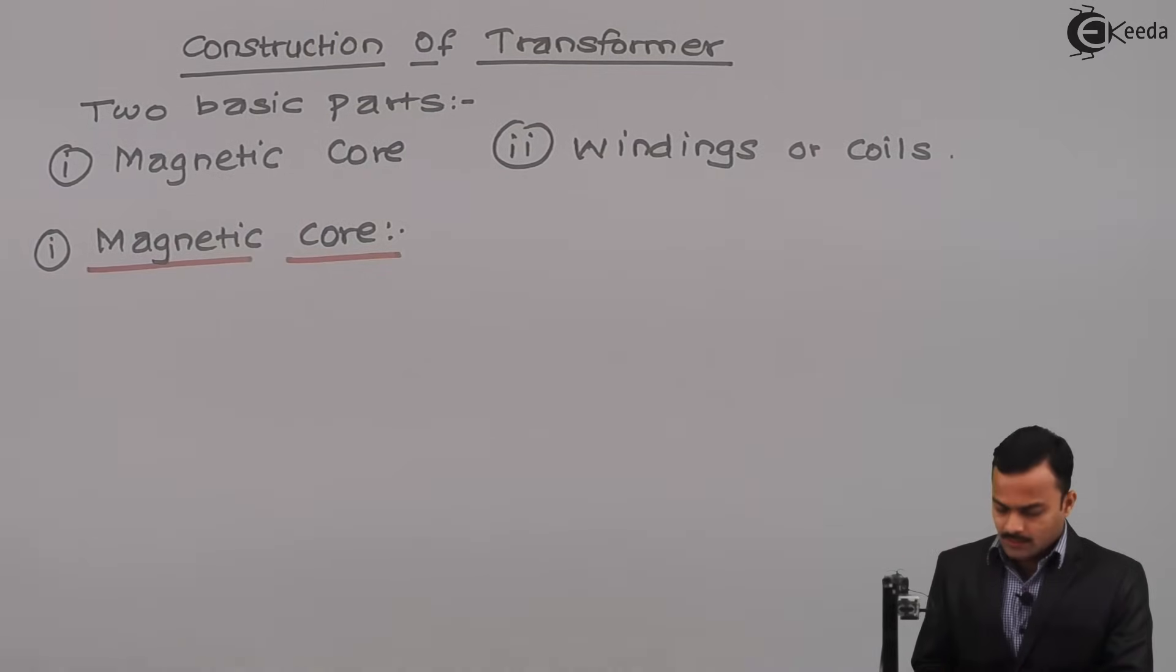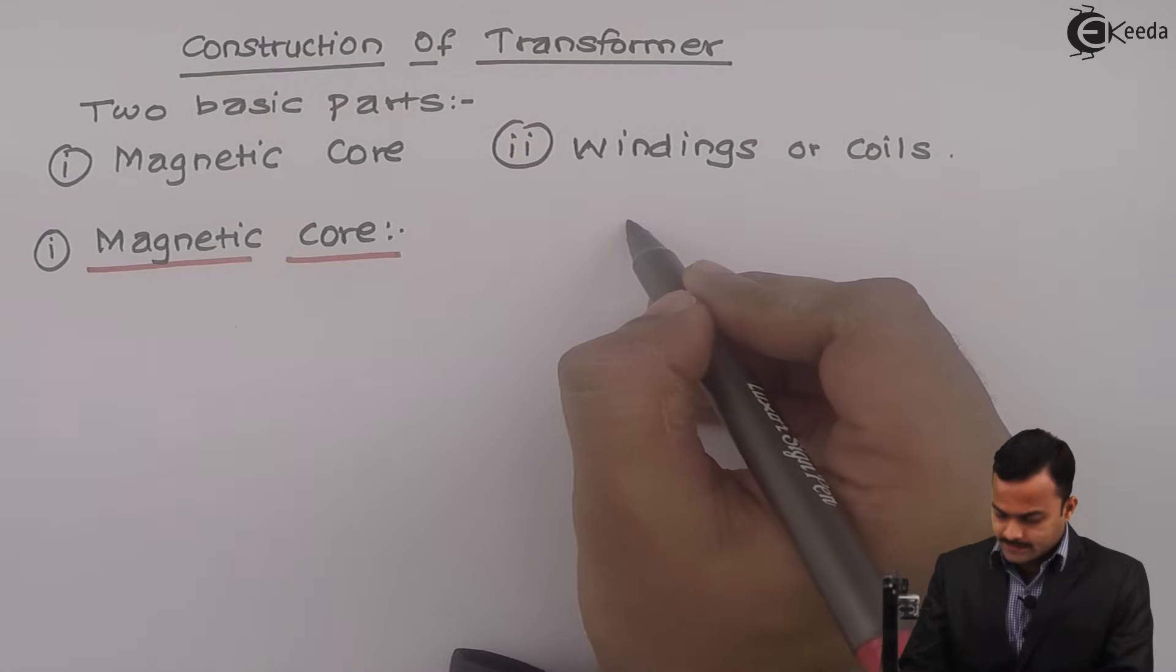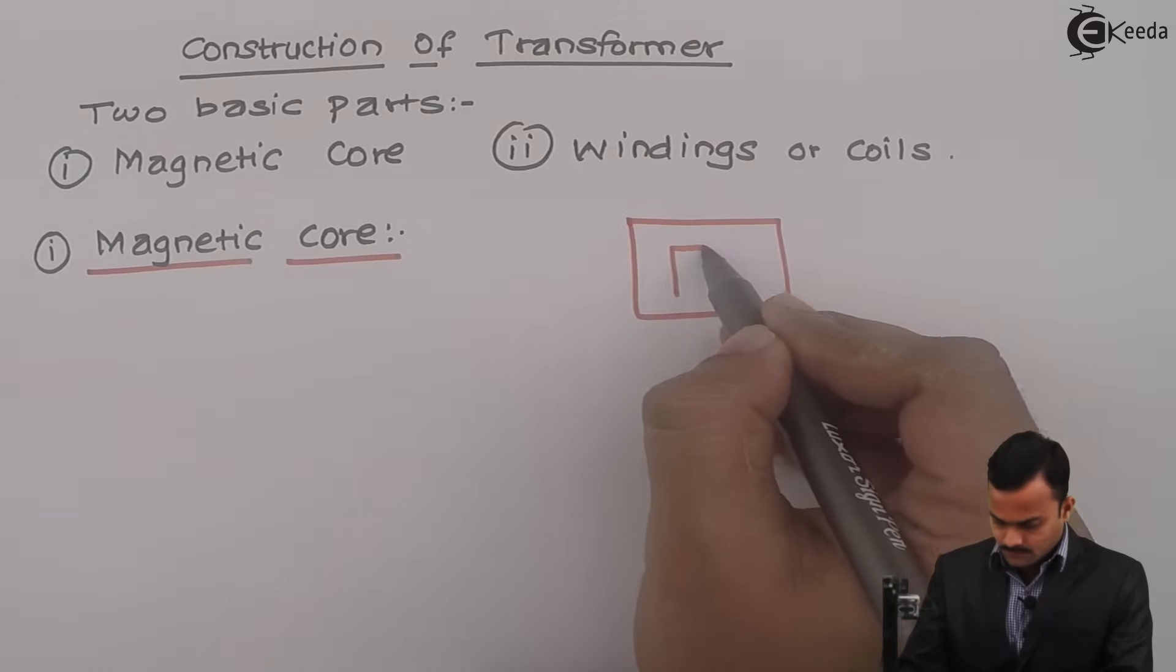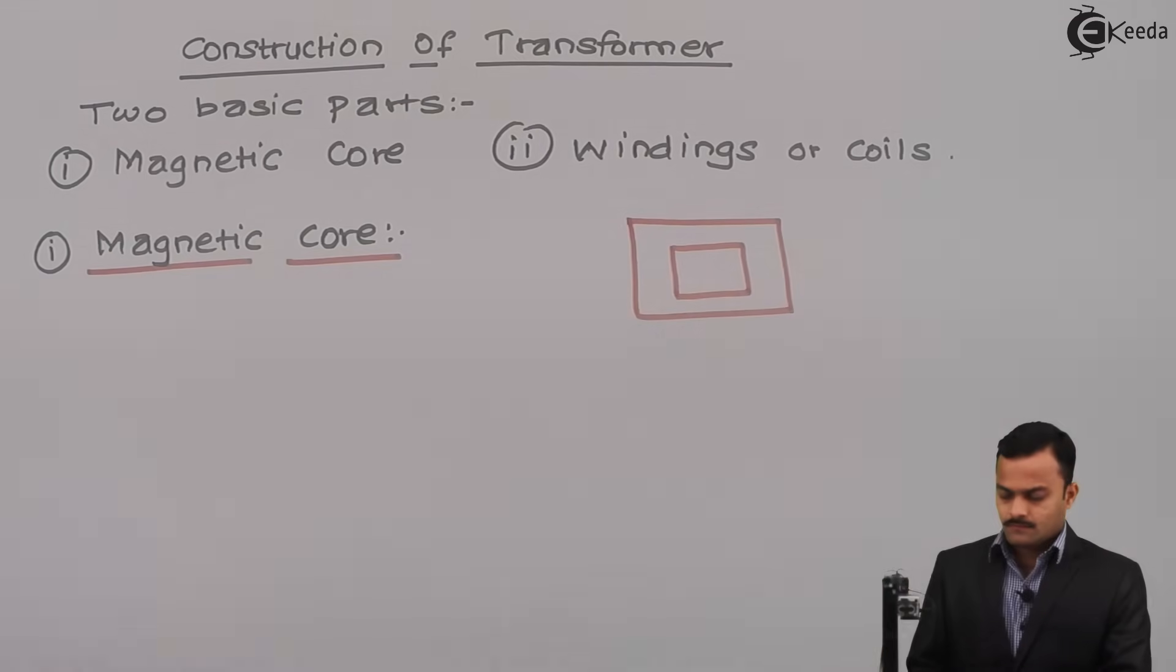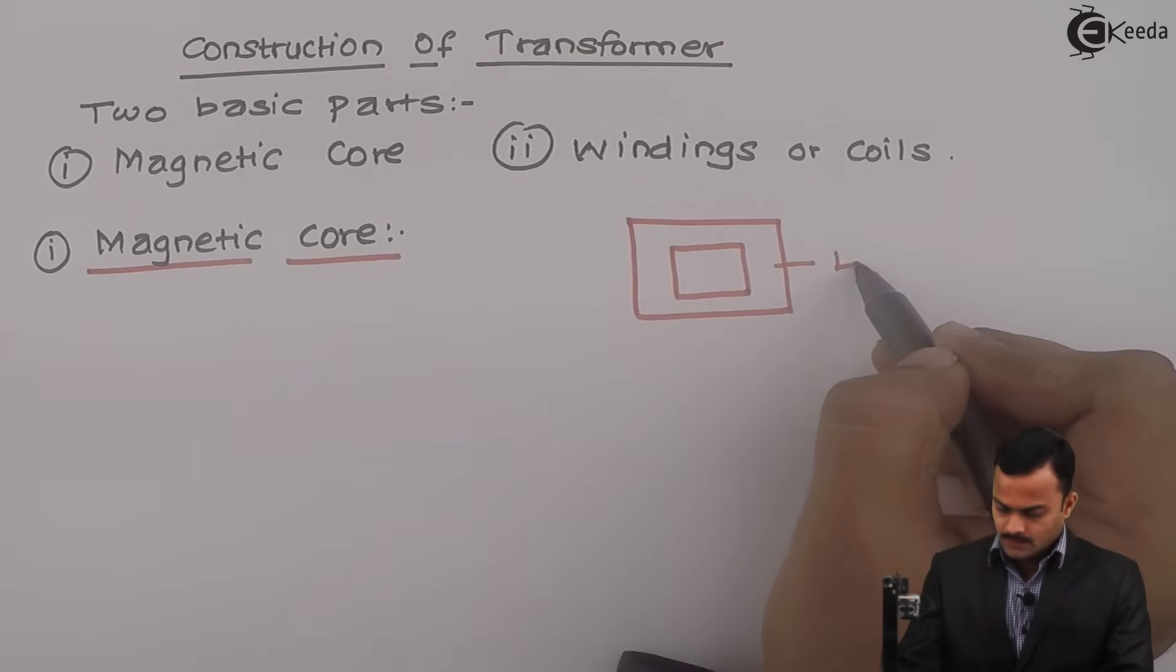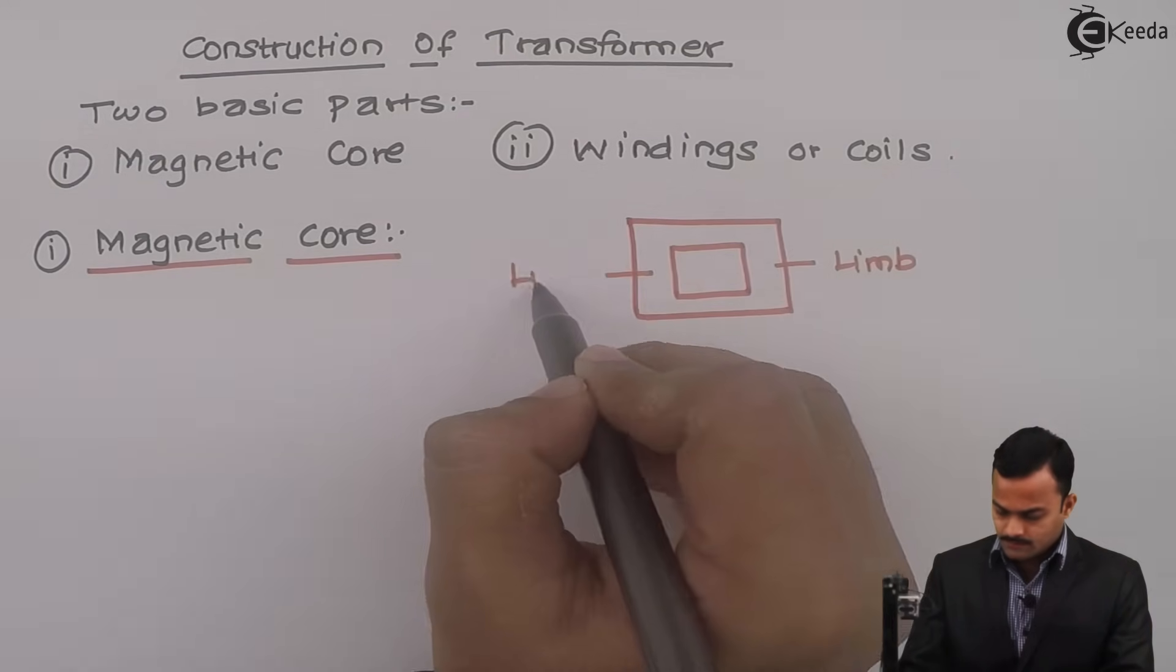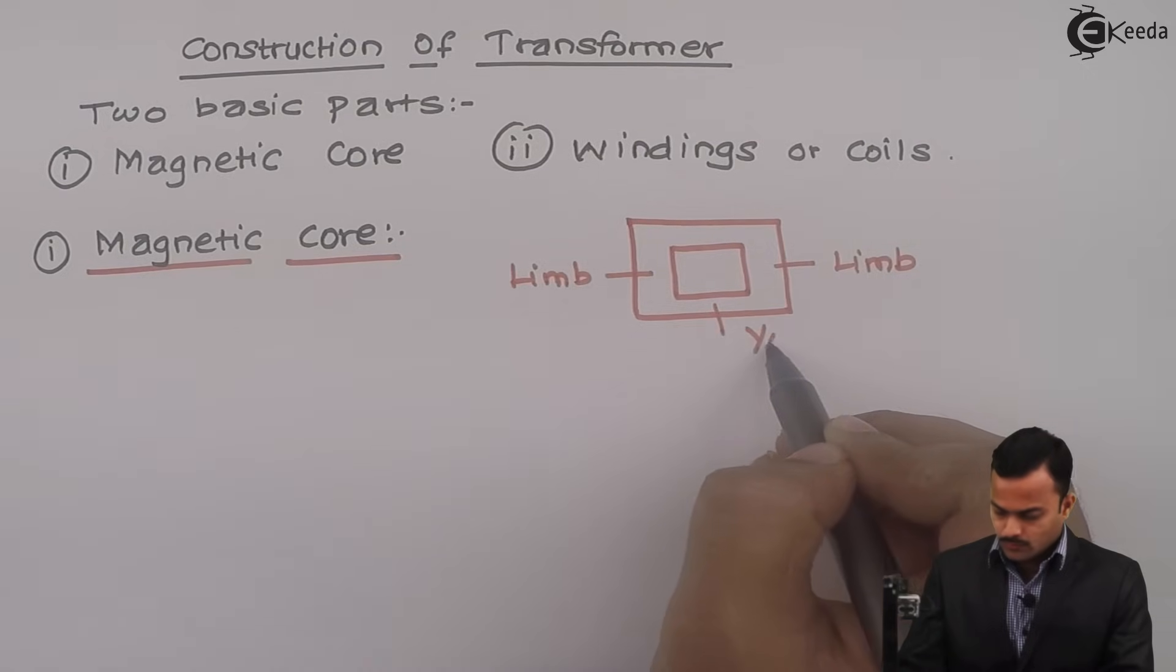So in a transformer, magnetic core is like this. This is called as a limb. This is also a limb. And this is called as a yoke.